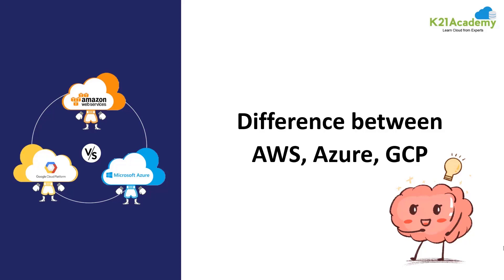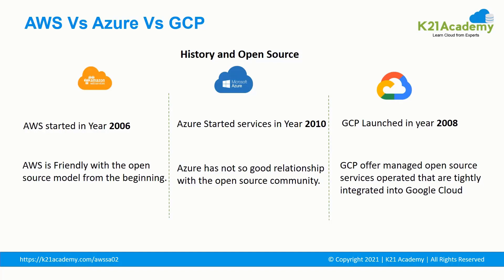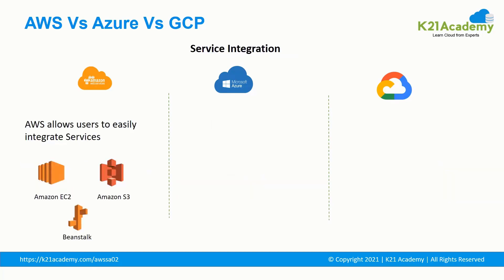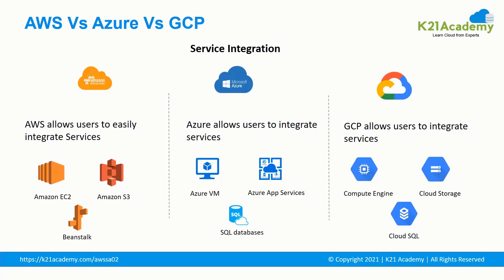Now let's see the actual differences between AWS, Azure and GCP regarding history and open source. AWS has been in the market since early 2006, Azure started its services in 2010, and GCP launched in 2008. AWS has been friendly with the open source model from the beginning, where Azure lagged a bit behind in its relationship with the open source community. GCP offers managed open source services tightly integrated into Google Cloud. For service integration: AWS allows easy integration with services like Amazon EC2, Amazon S3, and Beanstalk; Azure allows integration with Azure VM, Azure App Service, SQL Databases and more; GCP allows integration with Compute Engine, Cloud Storage, Cloud SQL and more.